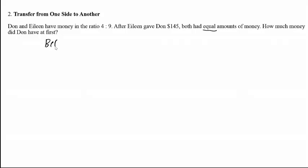We can use the before-after model. So before, Don is to Eileen, it's 4 to 9.